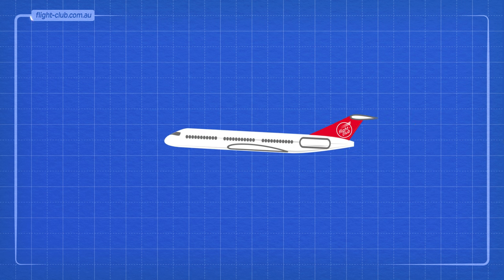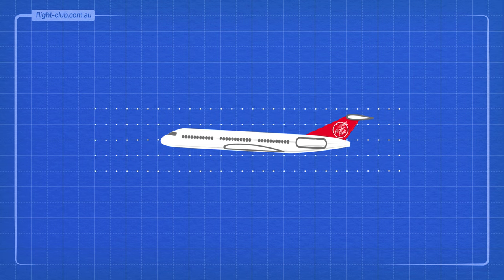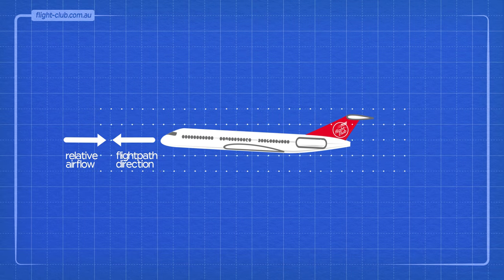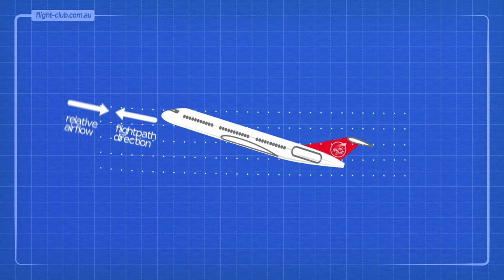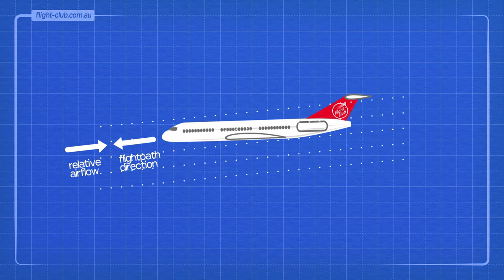An aeroplane in flight passes through countless particles of air in the atmosphere. These particles flow in a direction that is exactly opposite to the aeroplane's flight path direction. This is relative airflow, and it's important to remember that the relative airflow changes direction as the aeroplane's flight path changes direction.